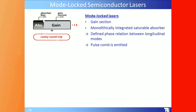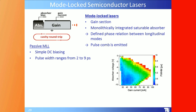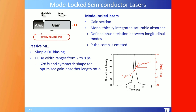Real devices fabricated with U2T (now part of Finisar): a mode-locked semiconductor laser has an absorber section and a gain section monolithically integrated, a defined phase relationship between longitudinal modes, and emits a pulse train. For passive mode locking with simple DC biasing, the color map as a function of absorber voltage and gain current shows the FWHM — the blue region produces the narrowest pulses. After chirp compensation, we reach about 600 fs with an asymmetric shape for optimized gain/absorber length ratio.